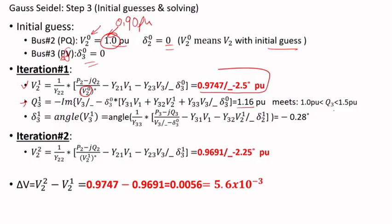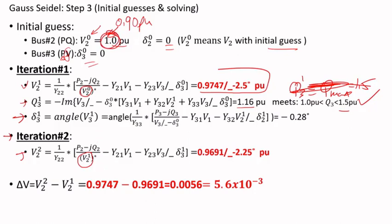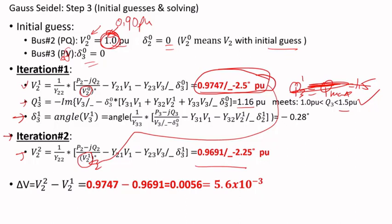The calculated Q₃ = 1.16 p.u., which is below the 1.5 p.u. limit, so Q_max is not triggered. The angle is then calculated. For iteration 2, instead of the initial guess, the previously calculated voltage is used in the equation. The voltage values continue to change but the differences get smaller each iteration, indicating convergence toward the solution.